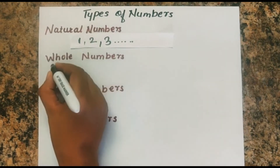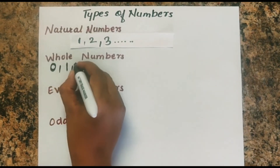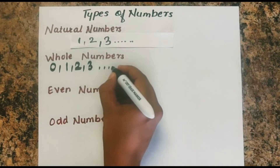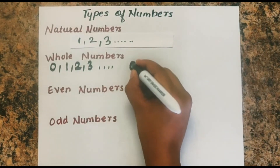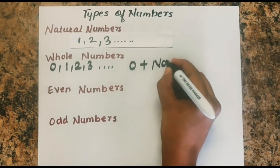Whole numbers start from 0. It's called whole numbers, or you can say 0 plus natural numbers.